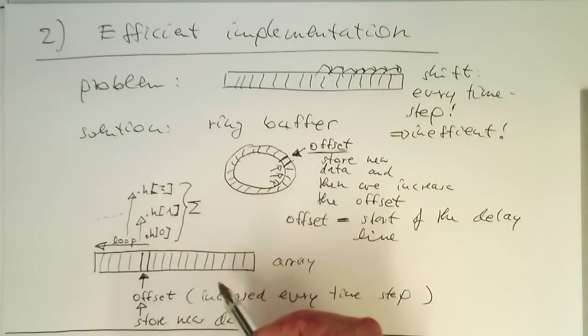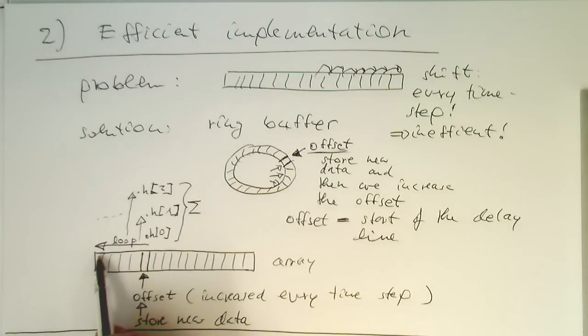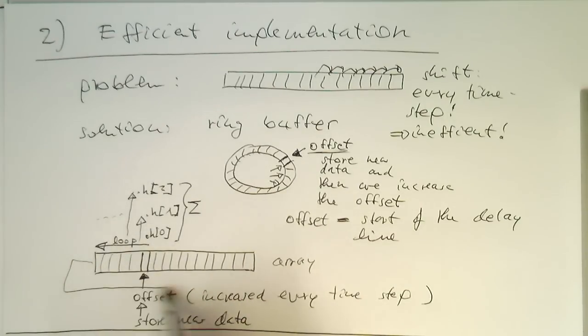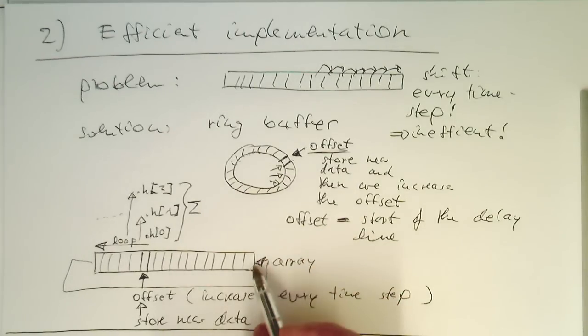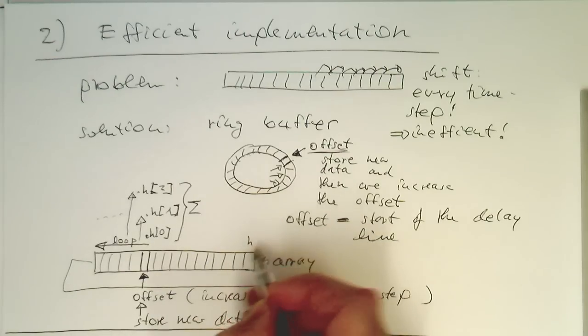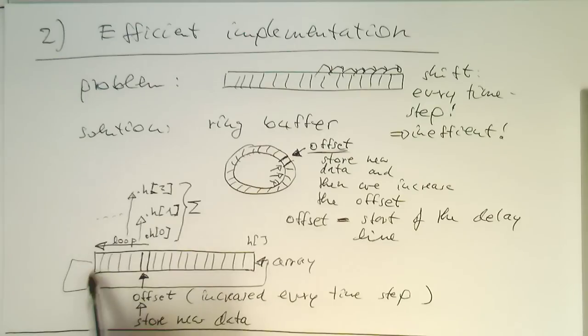This gives us our output. So now when we are reaching here at the beginning, what we do is we just wrap it around. So we just move our pointer to the beginning here again and do the rest here. So then at this point here, we're just wrapping around here.